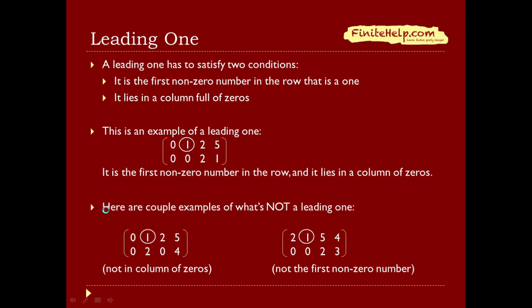Here are a couple of examples of not a leading 1: a 1 that's not in a column full of zeros, and a 1 that's not the first non-zero number.